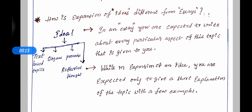In an essay, you are expected to write about every particular aspect of the topic given to you. While in expansion of an idea, you are expected only to give a short explanation of the topic with a few examples. That is called an idea.